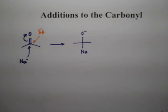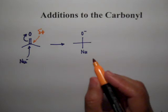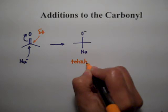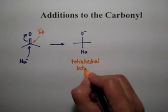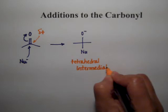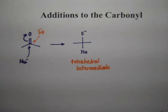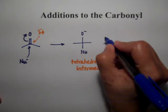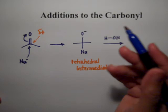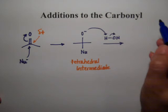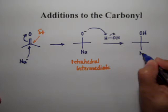This intermediate is what we arrive at any time we attack any carbonyl, so we call it the tetrahedral intermediate. When you get a tetrahedral intermediate, you check to see if you have good leaving groups. This one doesn't have any good leaving groups — the two CH3s are bad leaving groups, and the nucleophile we just added is also a bad leaving group. So the oxygen is going to pick up a proton from water, or from hydronium if you add a little bit of acid, and we end up with an alcohol.